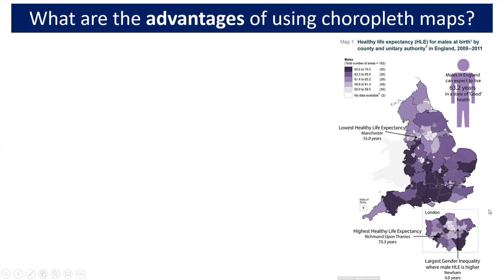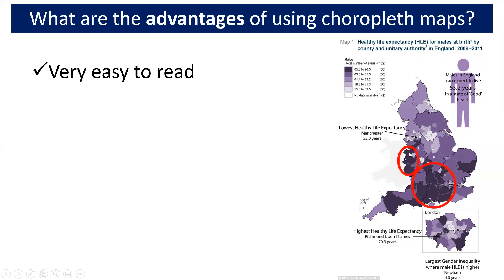The first obvious advantage of a choropleth map is it's very easy to read. If we look at this choropleth map we can see instantly that the areas circled in red have a much higher life expectancy — southern England and also parts of the midlands. Conversely, we can also see the lowest life expectancy is in the north of England. So it's very easy to read and it doesn't take very long.